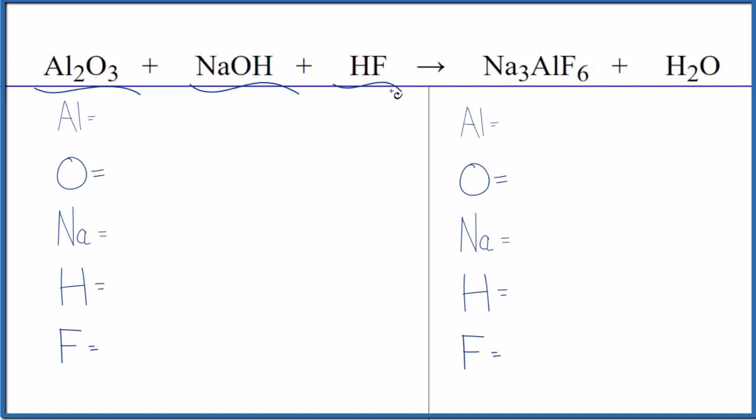Let's first count the atoms up and then balance the equation. We have two aluminum atoms, three oxygen atoms, but don't forget this one right here. So we have a total of four oxygen atoms, just the one sodium. Hydrogen, we have one plus one. So we have two hydrogens and just the one fluorine.